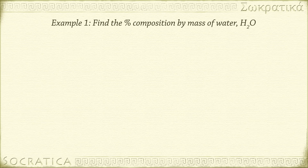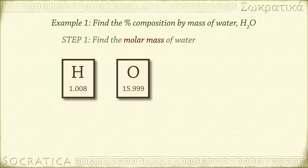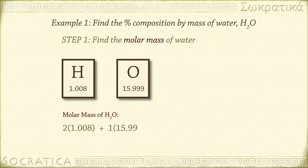First, we find the molar mass of water from the periodic table by summing up the gram-atomic masses from each element. Two times 1.008 grams per mole — that's the hydrogens — plus 1 times 15.999 grams per mole — that's the oxygen — equals 18.015 grams per mole.